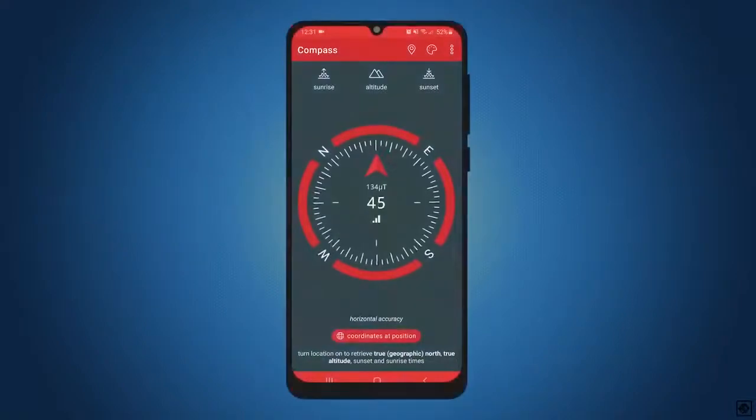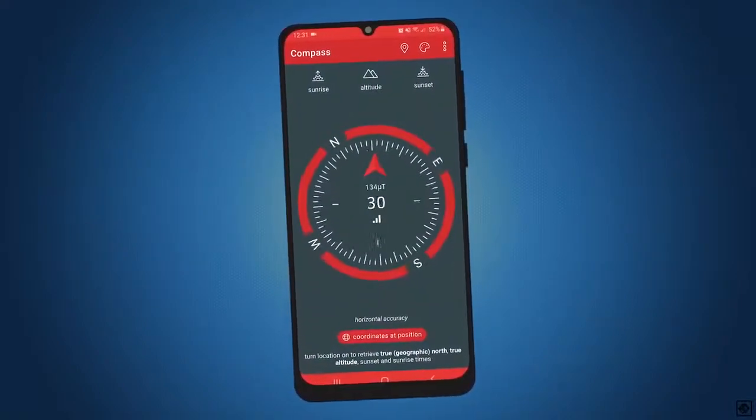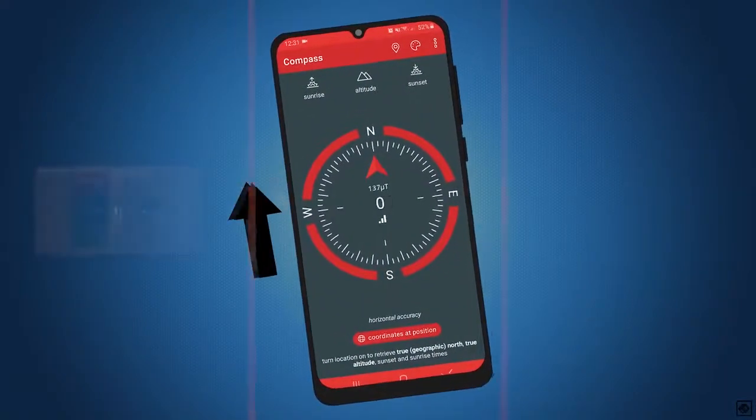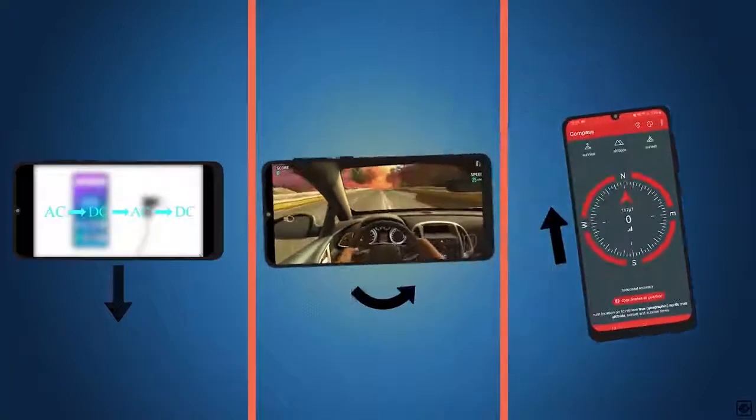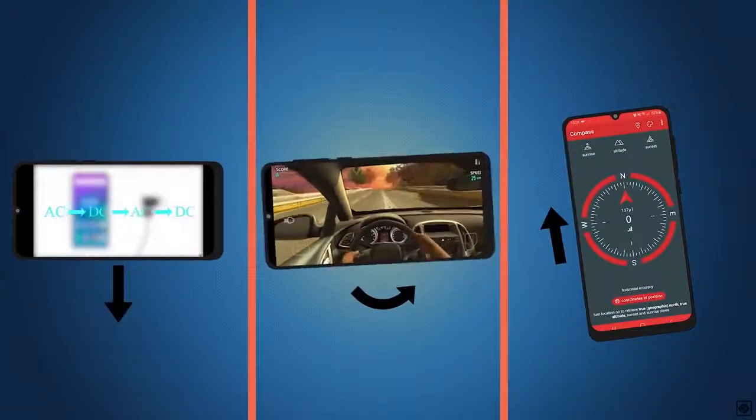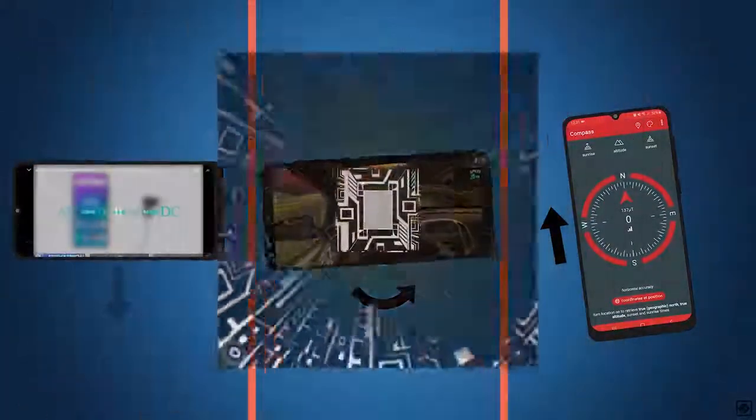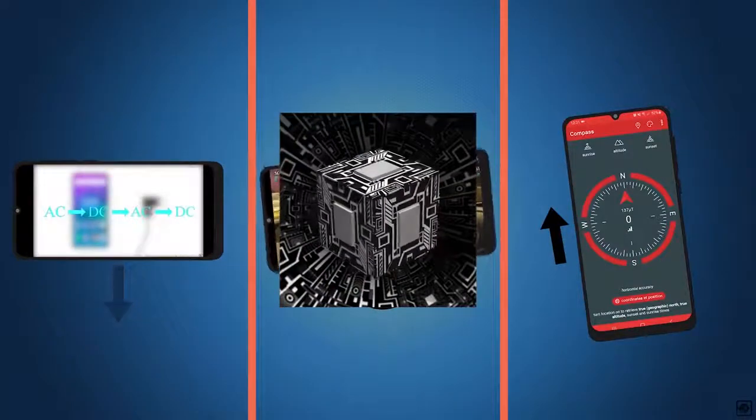And the compass that we use to get the directions on the map, how does it know where is the north? How does your smartphone know about its orientation? Today in this video we are going to explore these features of our smartphones.